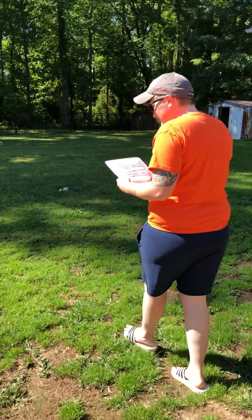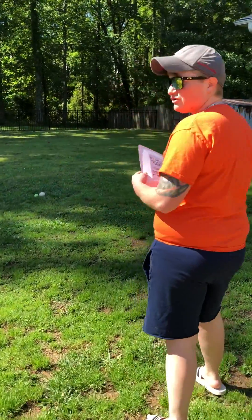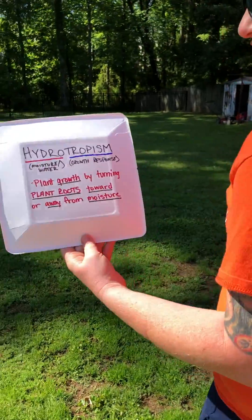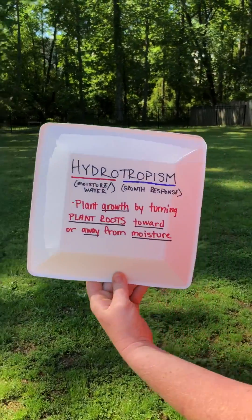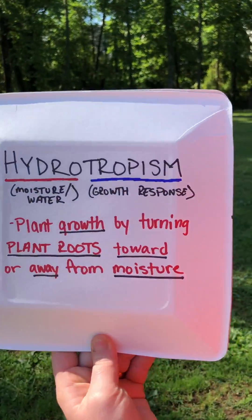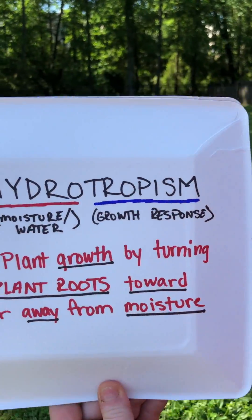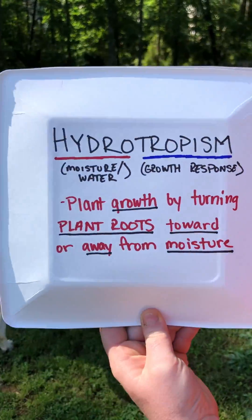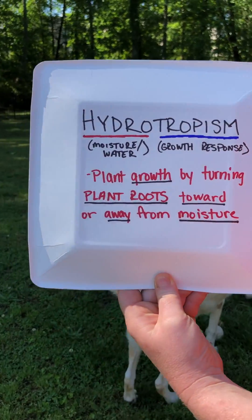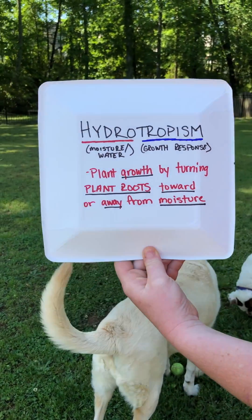Alrighty guys, let's continue on with tropisms. So today we're going to focus on hydrotropism. Tropism is the plant wanting to grow, utilizing something in its environment.